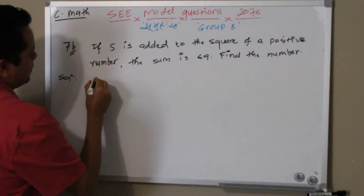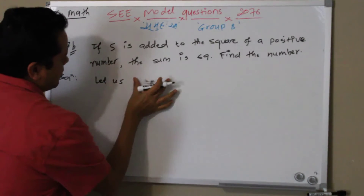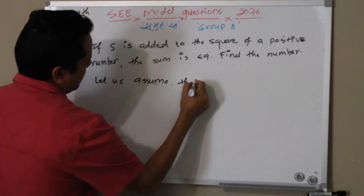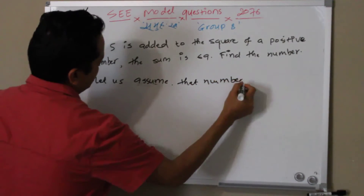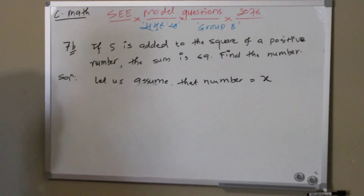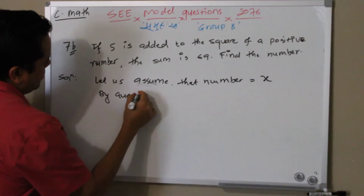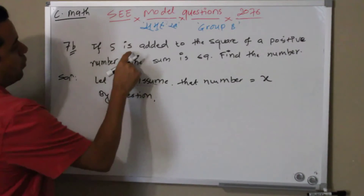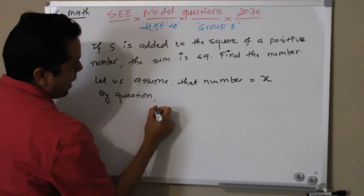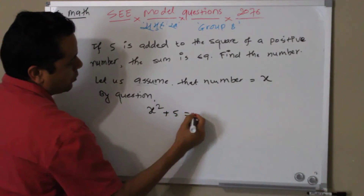Let us assume that number equals x. By the question, what it says is: if you add 5 on the square of the number — so I have to square x here — if I square the number and add 5, the sum would be 69. So: x² + 5 = 69.